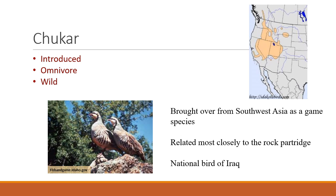Chukar are a small ground-dwelling bird that are an important game species. They were introduced to North America from Southeast Asia and are wild omnivores. They're beautiful little critters, most closely related to the rock partridge or other kinds of partridges. Interestingly, they're the native bird of Iraq, and we hunt them on rangelands in very rocky canyon grasslands and canyon areas.